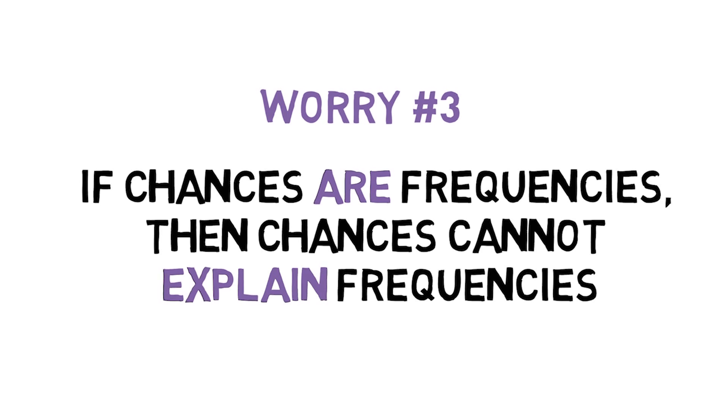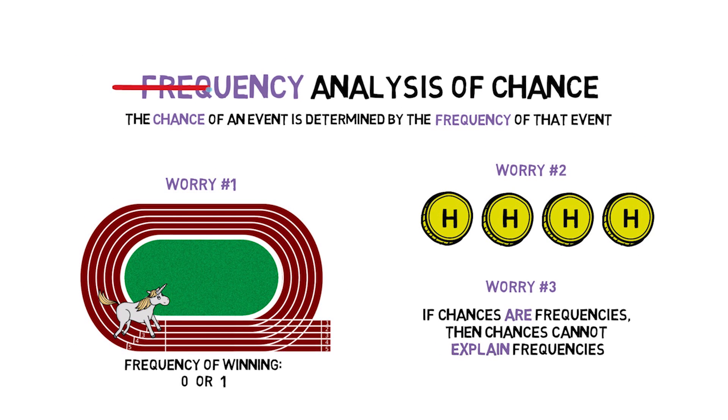As a result of these, and many other worries, most philosophers have abandoned this sort of straightforward frequency analysis of chance. One option is to shift to a more sophisticated version of frequentism, like hypothetical frequentism, or a best systems analysis. Another option is to back away from the frequency analysis of chance entirely.